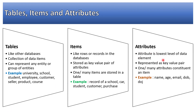An attribute is the lowest level of data element in DynamoDB. Items are comprised of attributes, represented as key-value pairs. One or many attributes constitute an item — for example, name is one attribute, age is another attribute, and all these attributes combined can represent an entity like a student or customer.